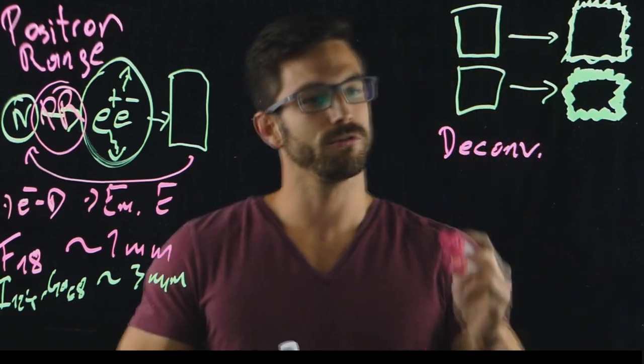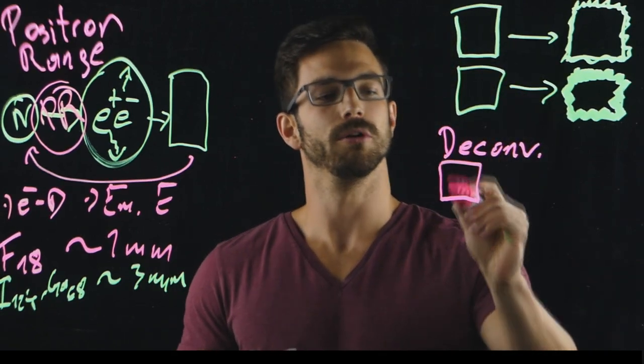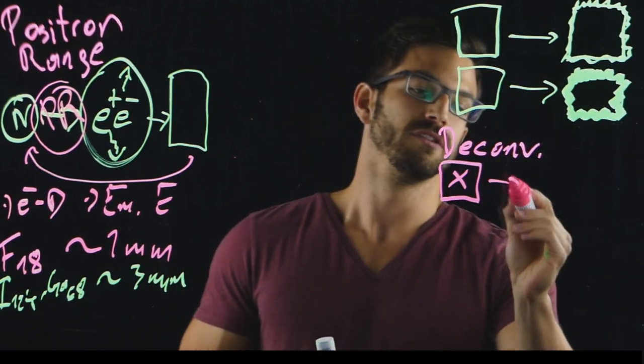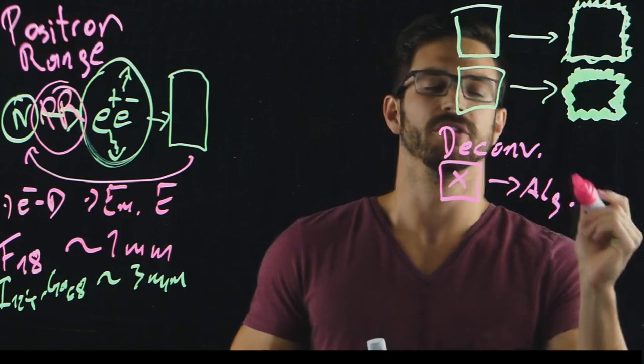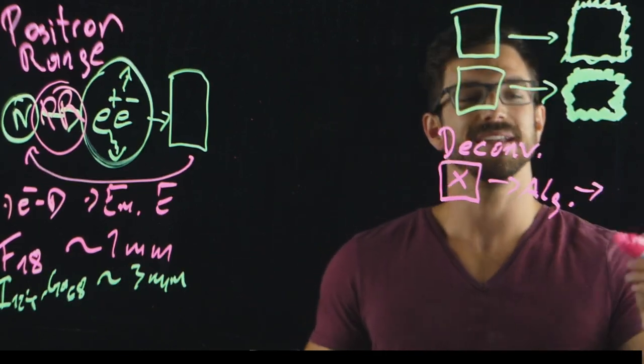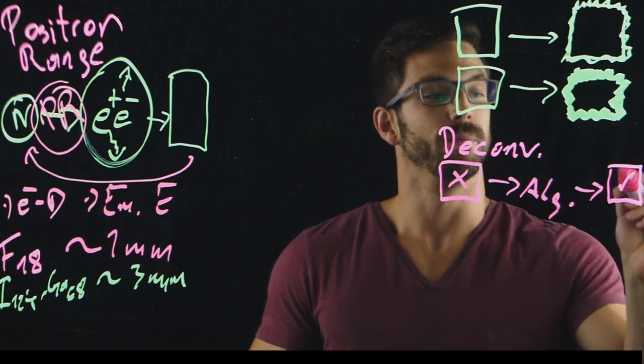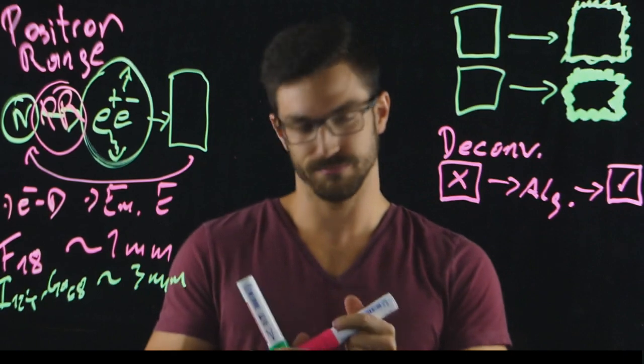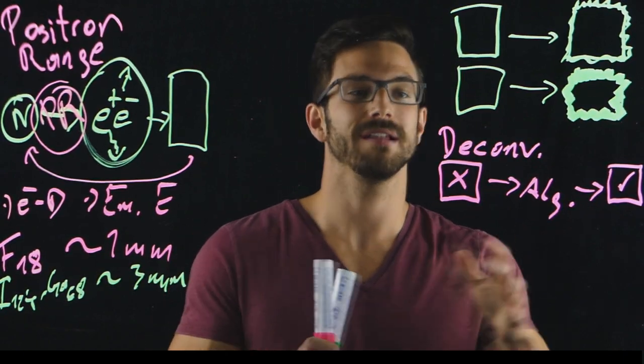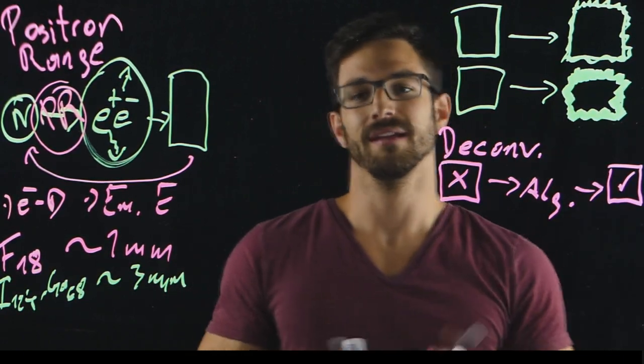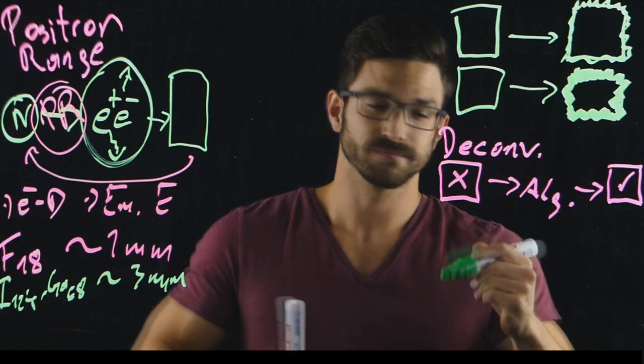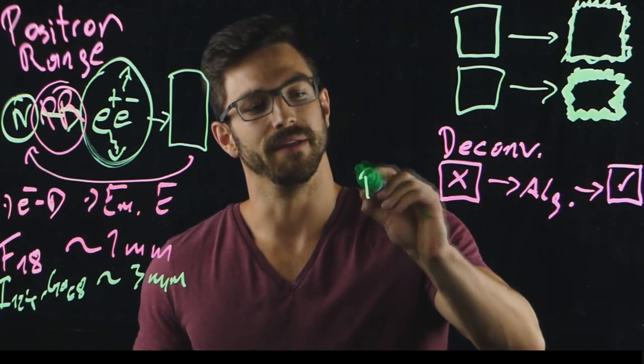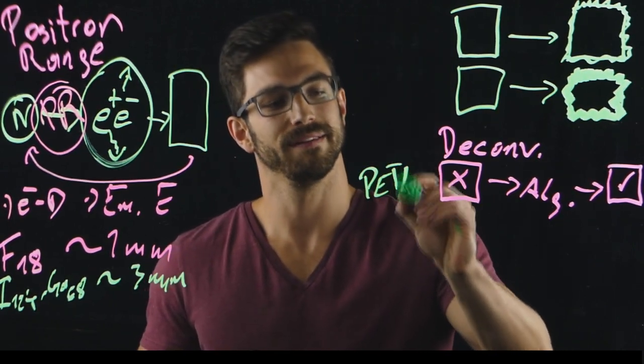What we do in deconvolution is that we take the blurred image, use an algorithm as a post-reconstruction technique, and what we get out after this is an image that is corrected for positron range. A little bit of noise is induced by the deconvolution algorithm. Nevertheless, it deals with the blurring. This is standardly implemented in PET-CT.